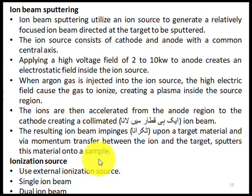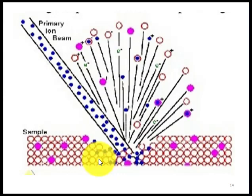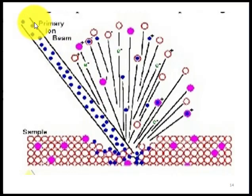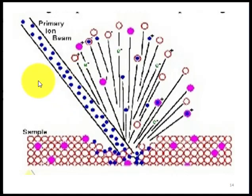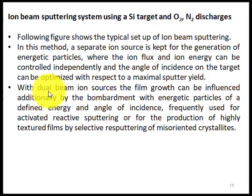The ionization source can be an external single ion beam or a double ion beam. In the ion beam sputtering diagram, you can see the primary ion beam striking the target in one line — all ions attack the target material in a collimated fashion, which is why this technique is called ion beam sputtering.